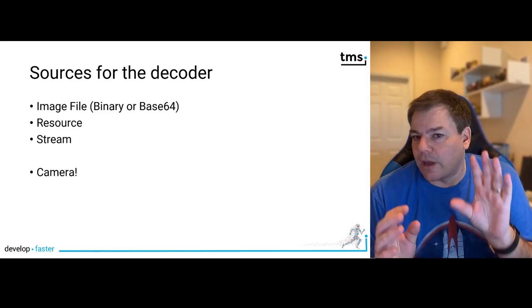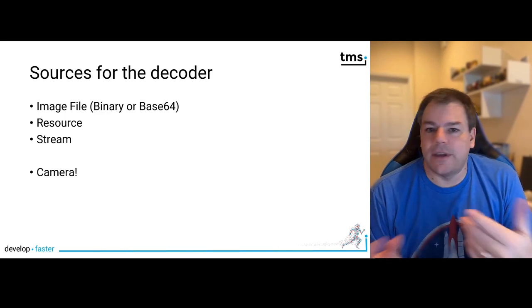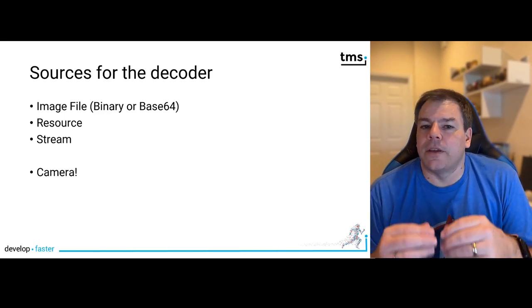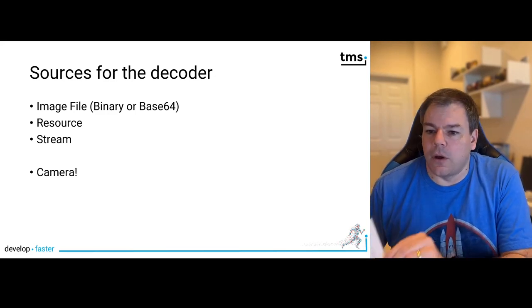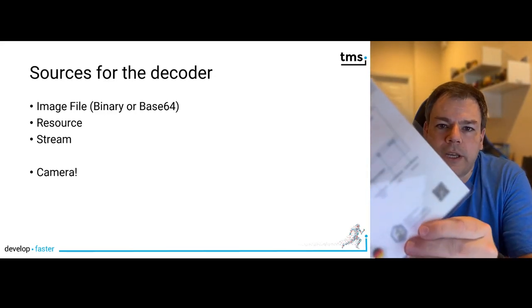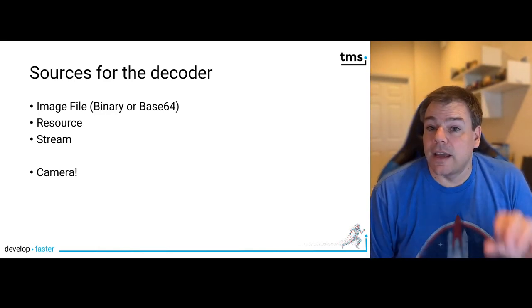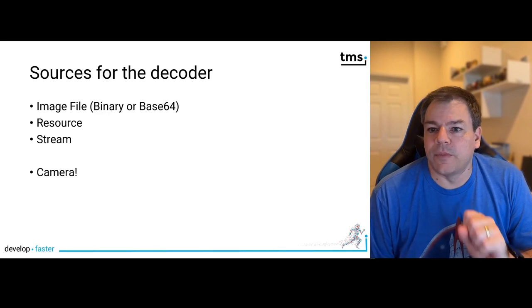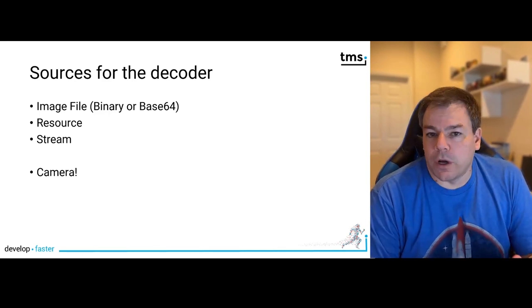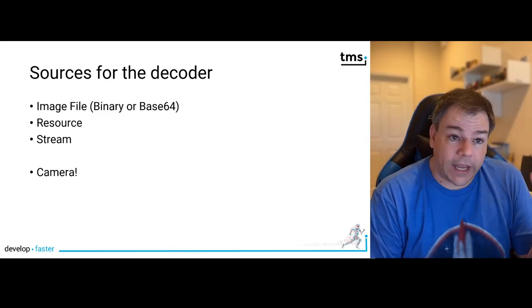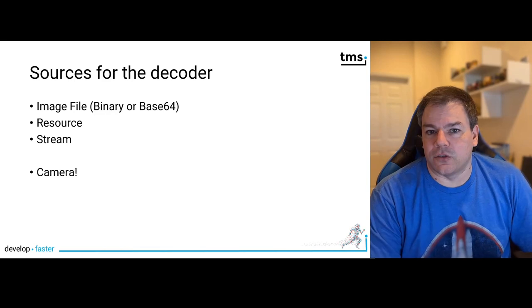The ability you have with these controls using the camera is amazing because the barcode is recognized live. It's not like some other control packs where you take an image with the camera and then that image is used — the barcode recognition is actually live. That means while you move the barcode into the camera, at some point the component will automatically send an event saying it has decoded the barcode, giving you a truly interactive experience for scanning tickets or other access control scenarios.